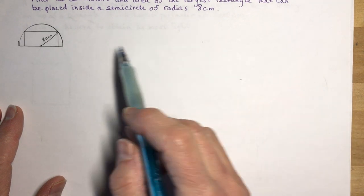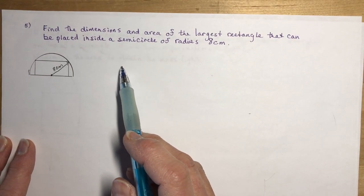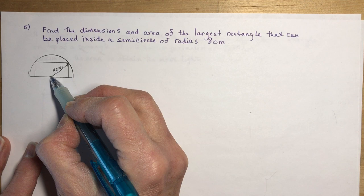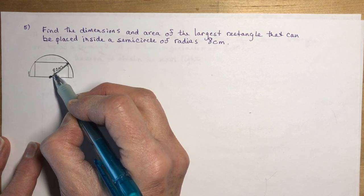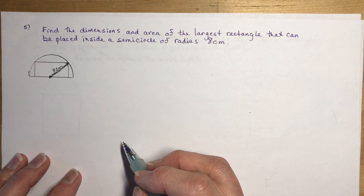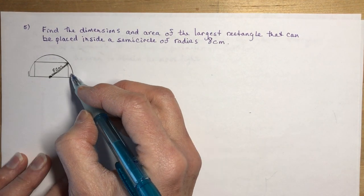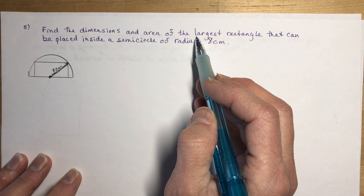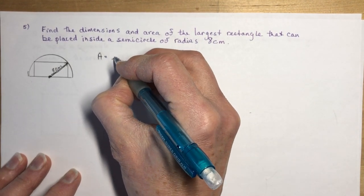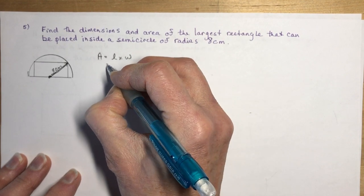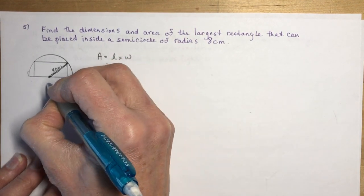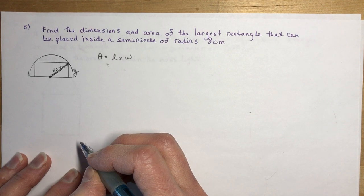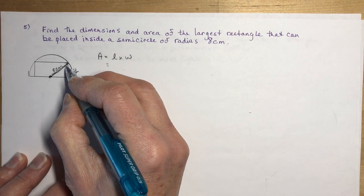Let's move on to the second problem: find the dimensions and area of the largest rectangle that can be placed inside a semicircle of radius 8 centimeters. First, draw a diagram. Here's my semicircle — all I know is that the radius is 8 centimeters long. I need to think about the length and height of the rectangle I'm maximizing — so I'm maximizing area, which is length times width.